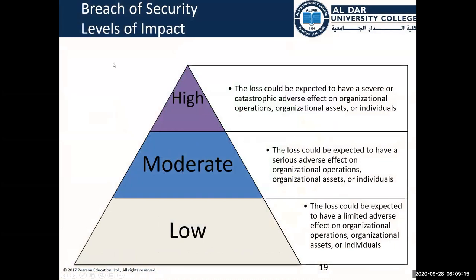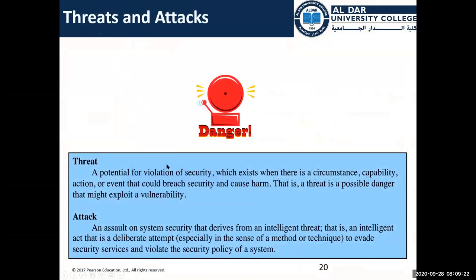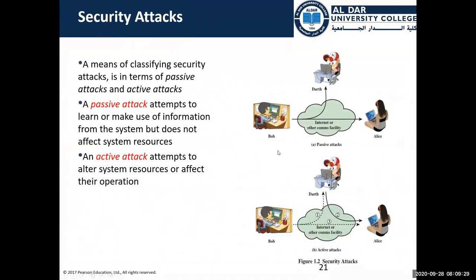We defined that a breach of security has three levels: low, moderate, and high. We gave examples of that. We also defined the difference between threat and attack, and introduced two types of attacks: passive attacks and active attacks. A passive attack doesn't affect the data, but an active attack may affect, delete, or change the data.